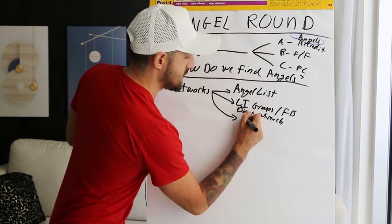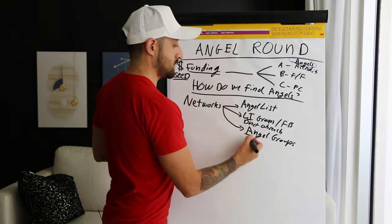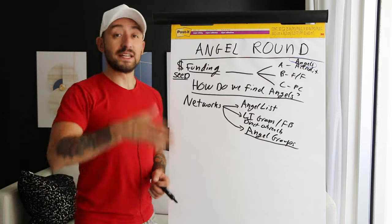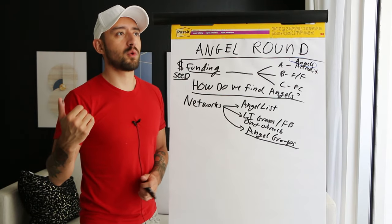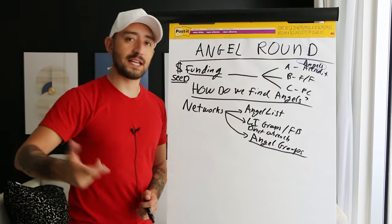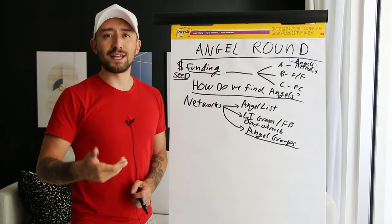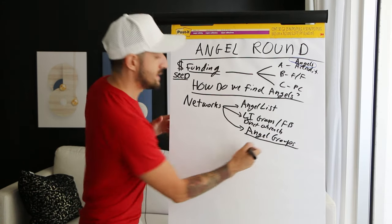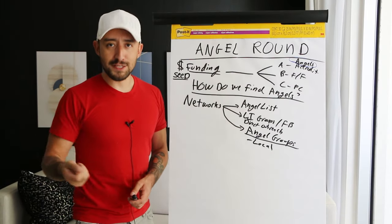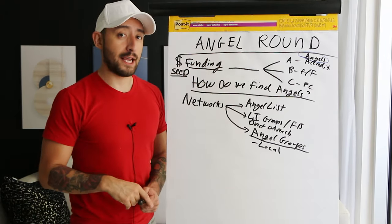The other approach is angel groups — typically local. These are groups in your area that regularly hold demo days, pitch events, meetups on Eventbrite or Meetup.com, professional gatherings for startups and investors. They could be connected to incubators or accelerators. Angel groups are an in-person way to actually begin networking with potential angel investors and get in front of people most likely to put capital into your company at the angel round stage.